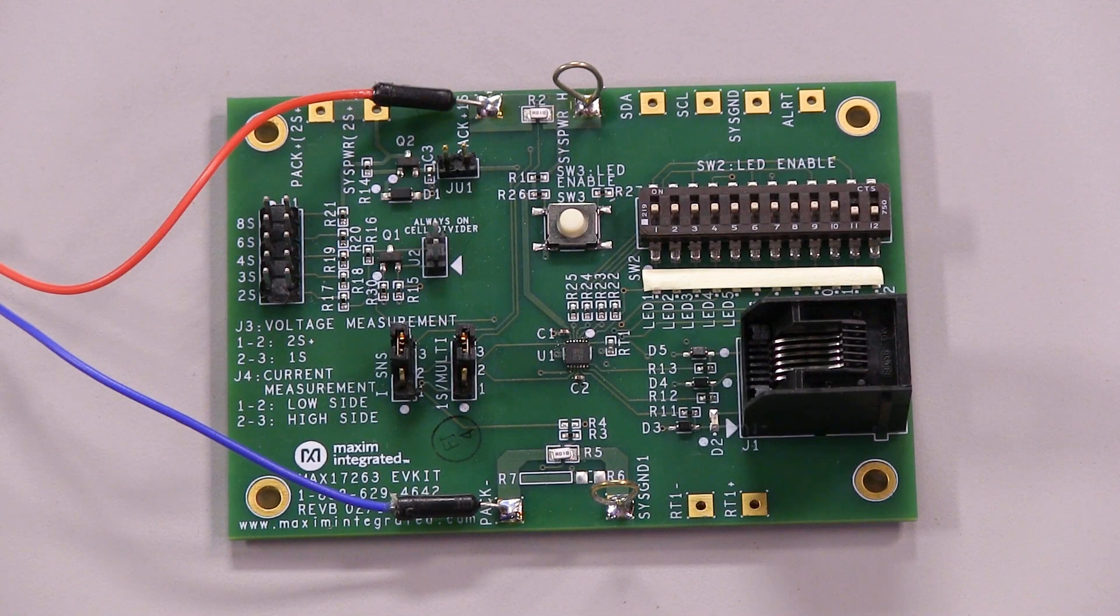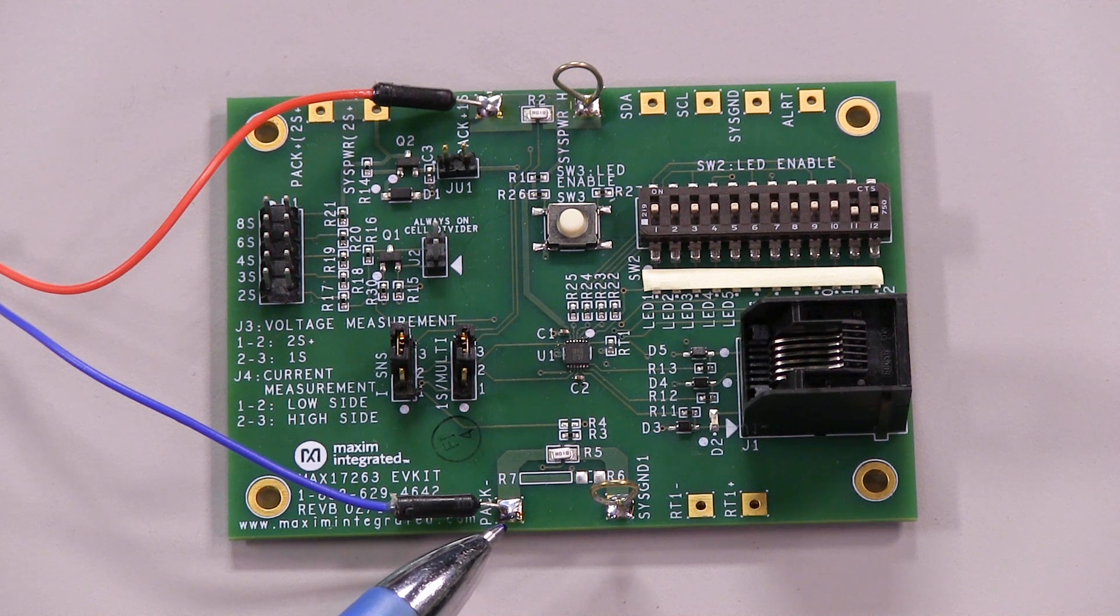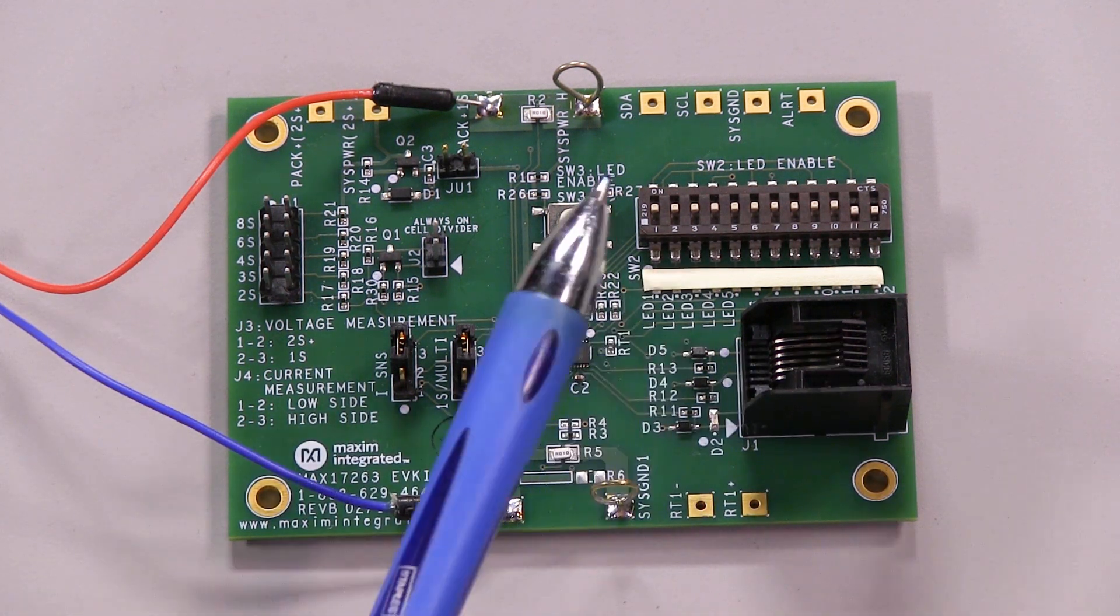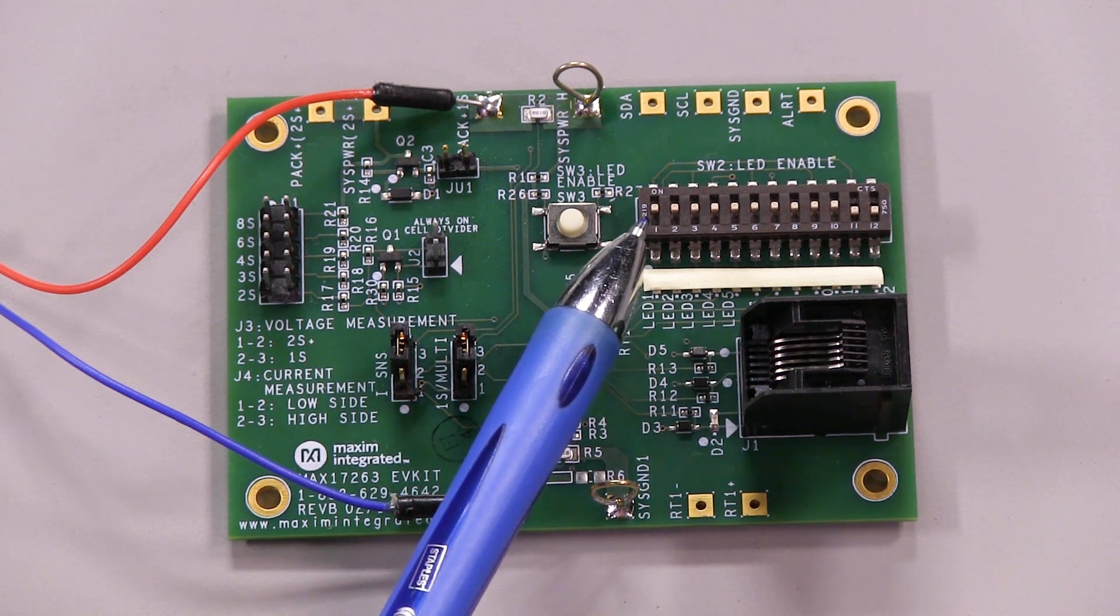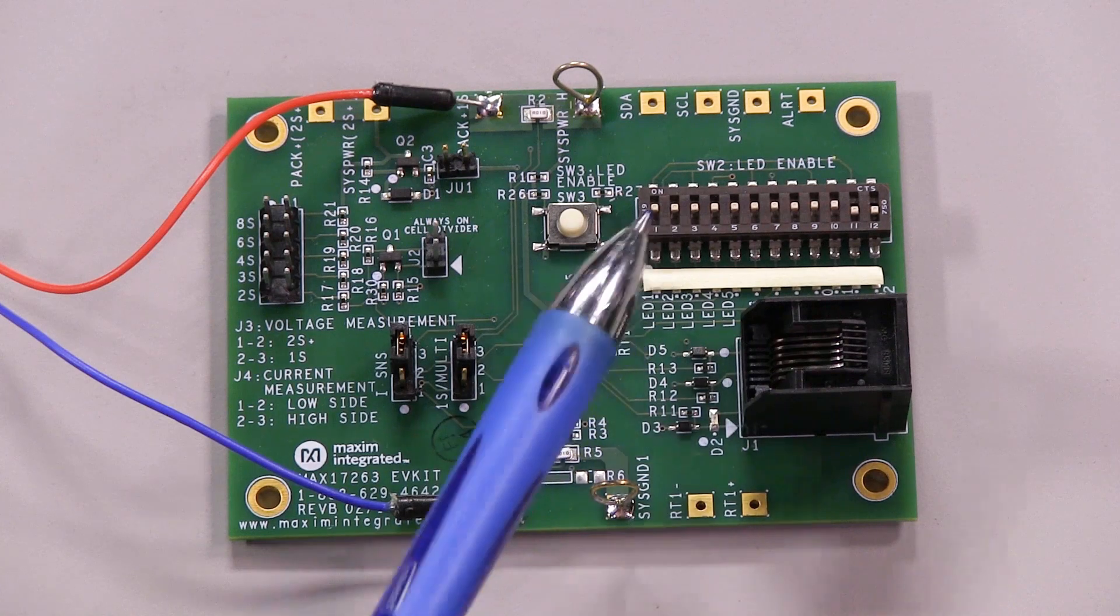I have a single cell battery, so I'll connect it across the PAC plus 1S and PAC minus terminals on the board. But before I connect the battery, I need to set the number of LEDs to use by flipping these switches over here. I want to use 10 LEDs, so I'll flip the first 10 switches to the on position.